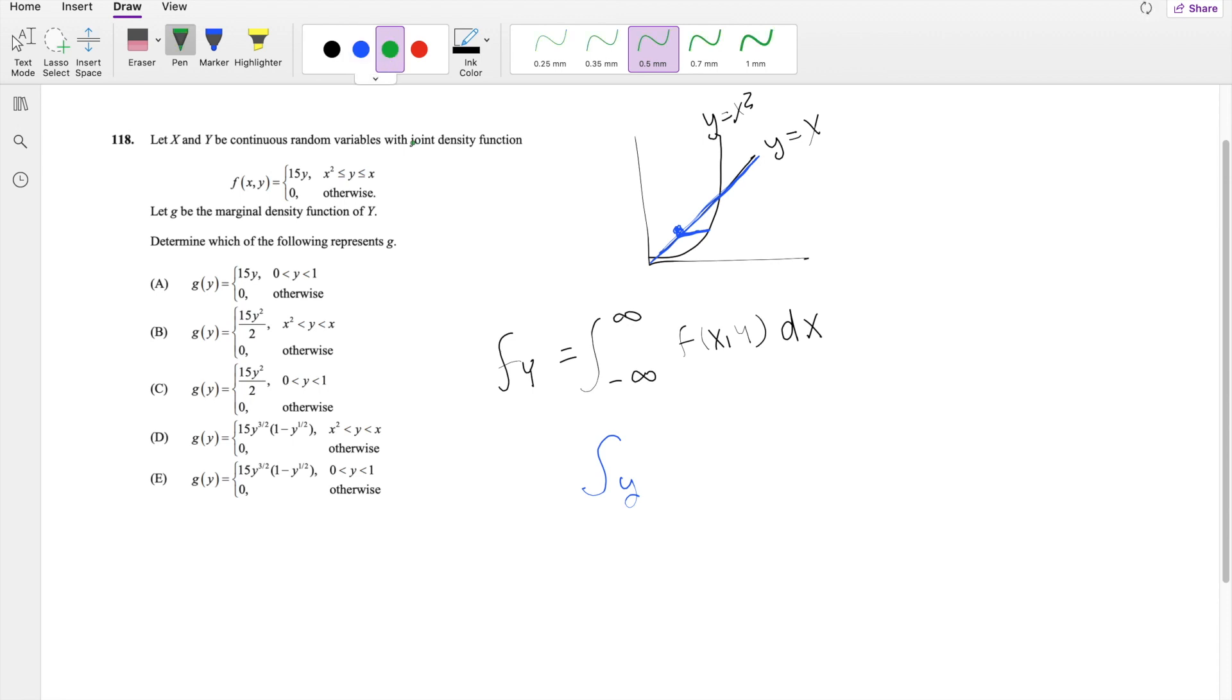And then the upper limit is going to be this side here, this line here. Solving this in terms of y, you get square root of y equals x. And you know that this is going to be the positive square root of y, not the negative, because it's in the first quadrant. So this is going to be square root of y for the upper bounds.